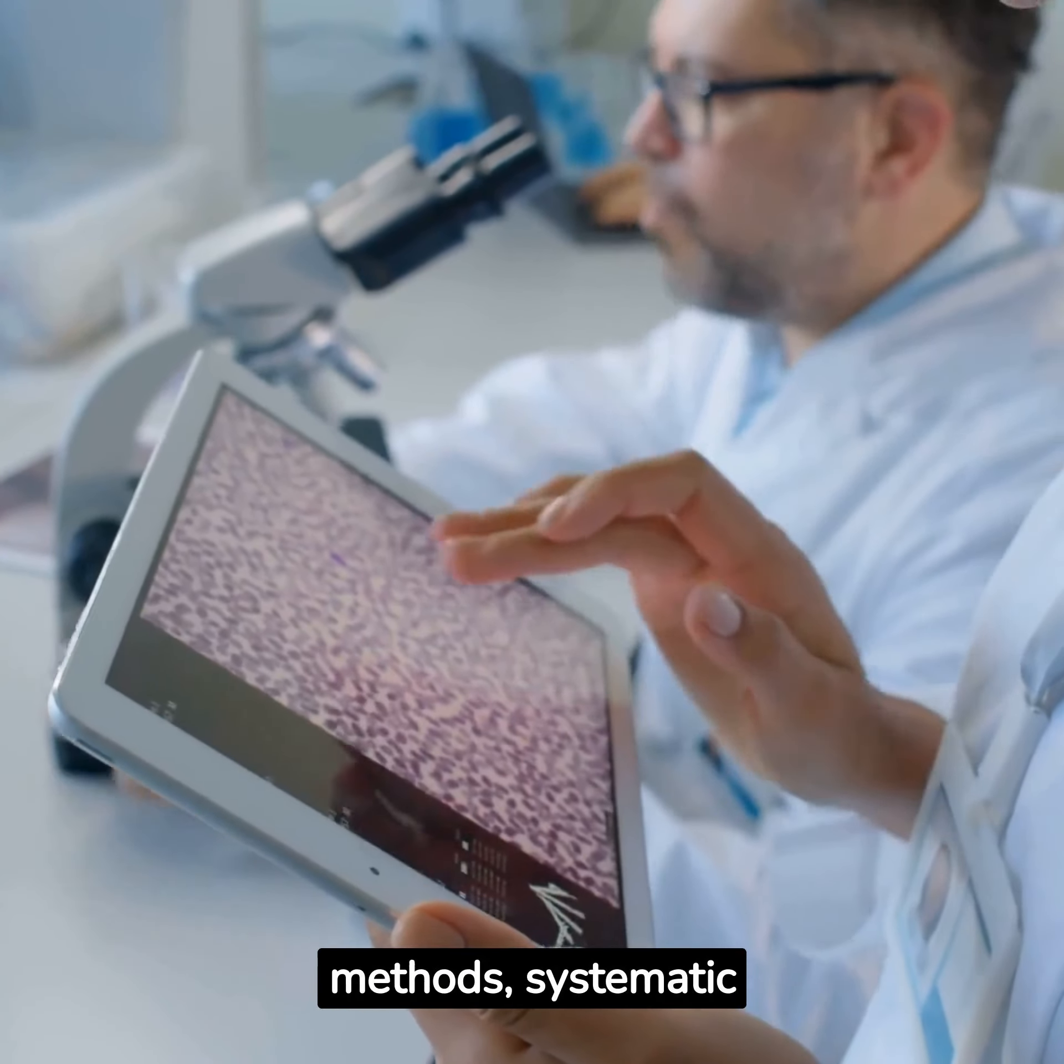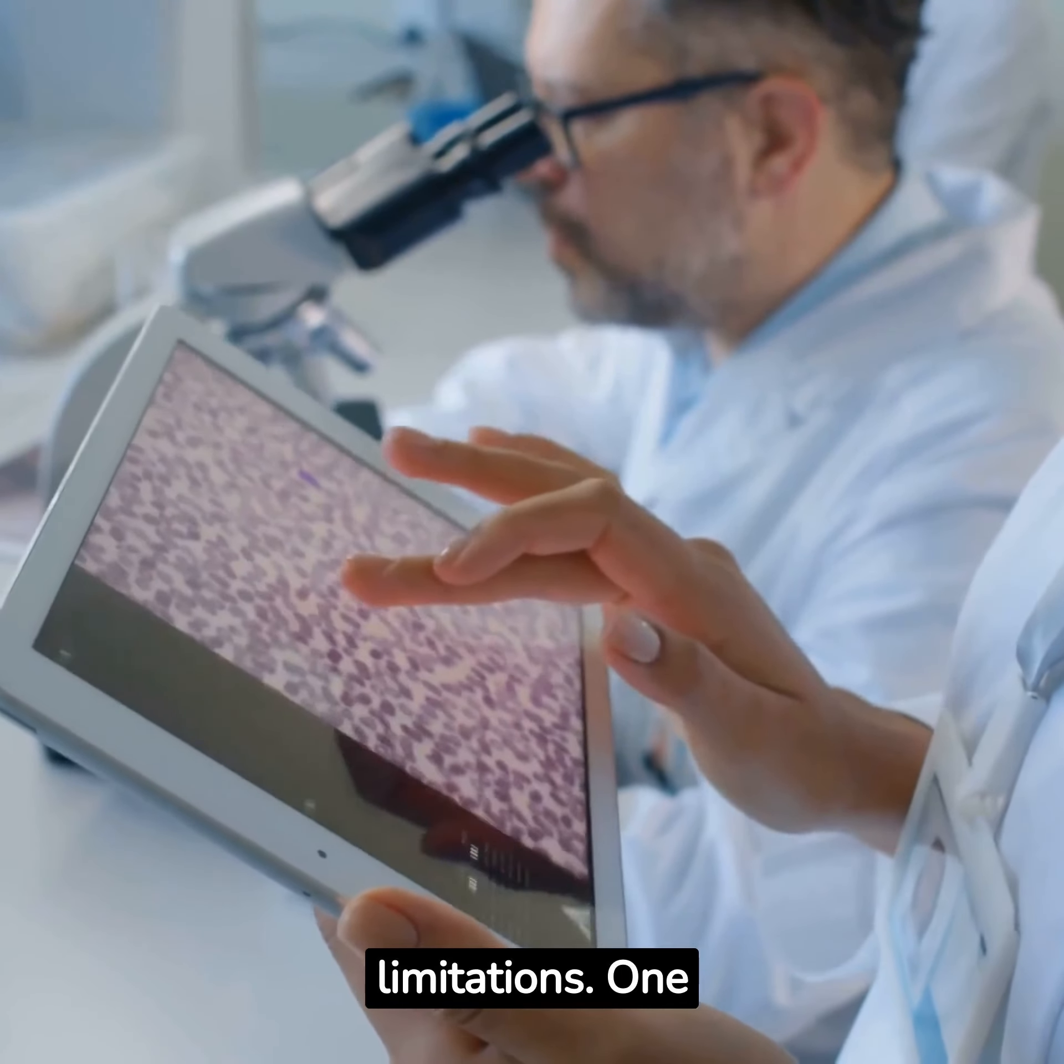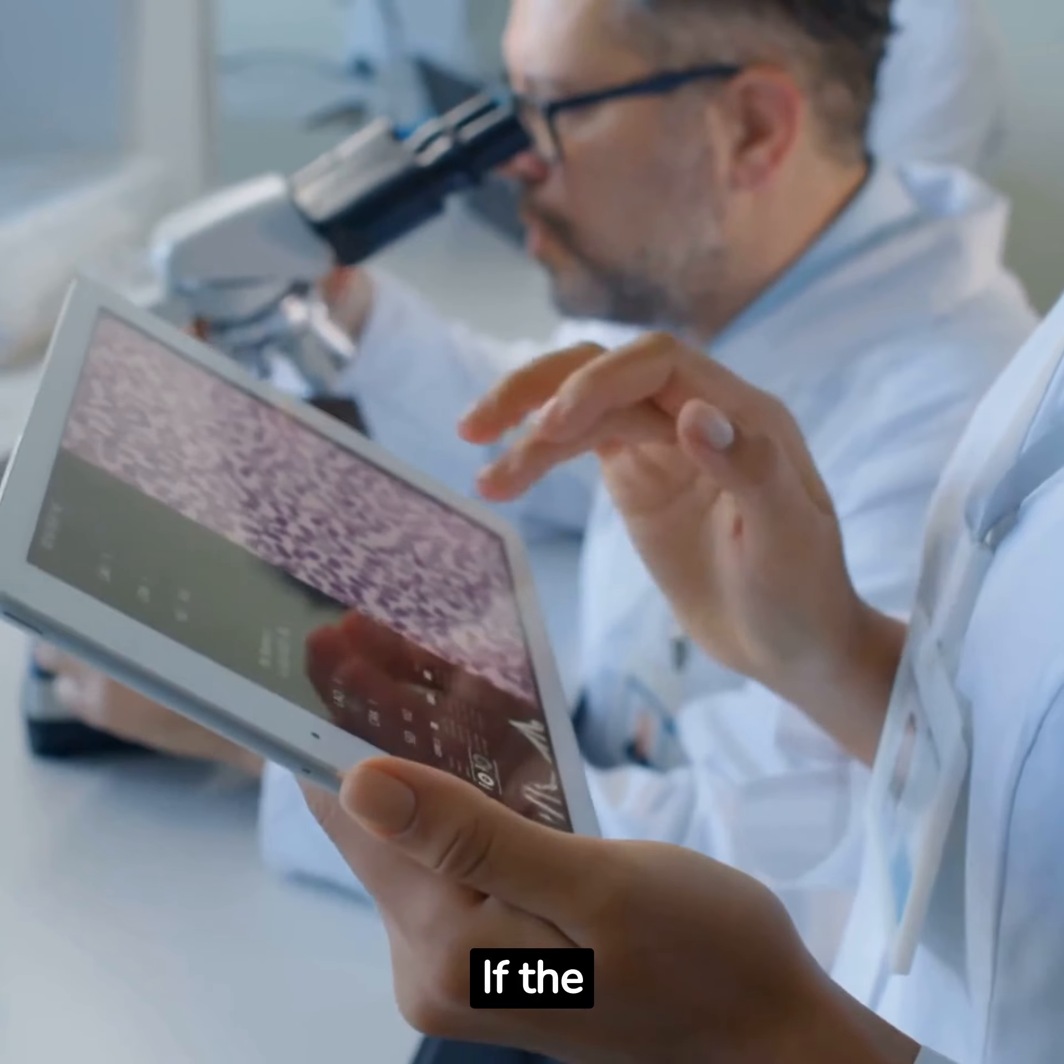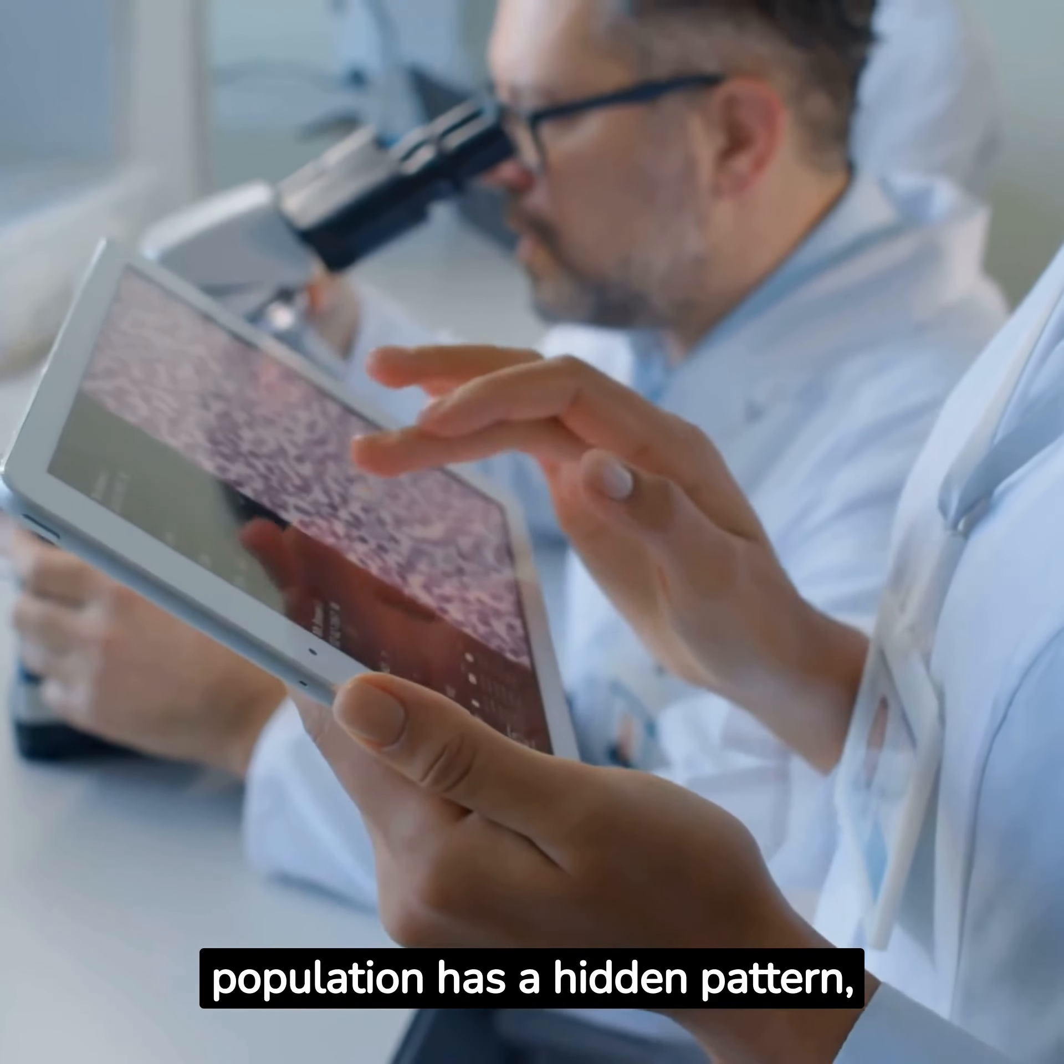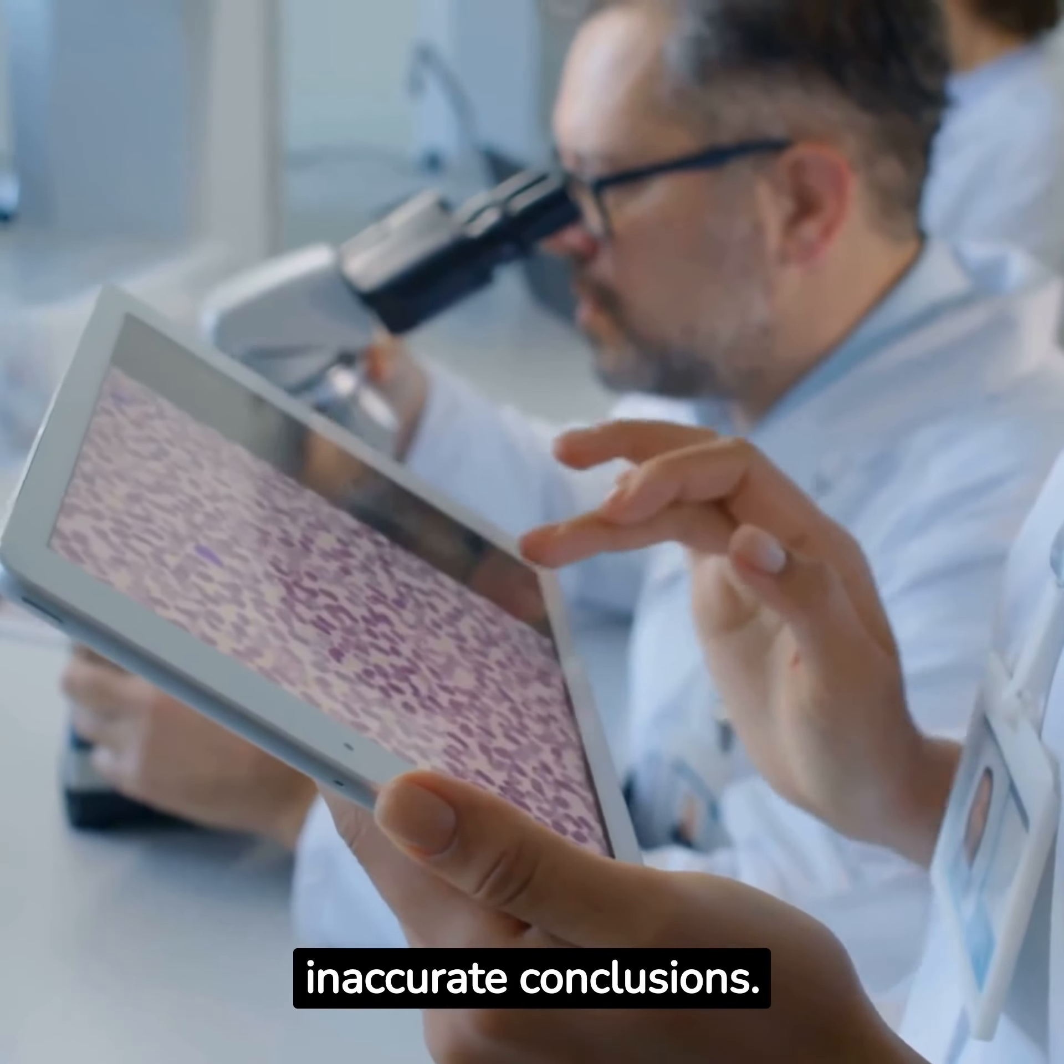However, like all methods, Systematic Sampling has its limitations. One key disadvantage is the risk of pattern bias. If the population has a hidden pattern, it may coincide with the sampling interval, skewing the results and leading to inaccurate conclusions.